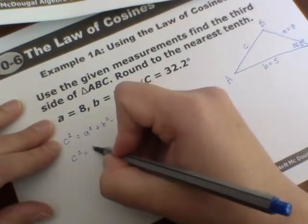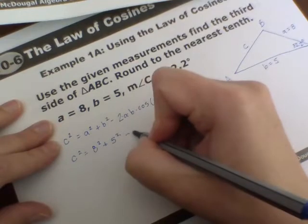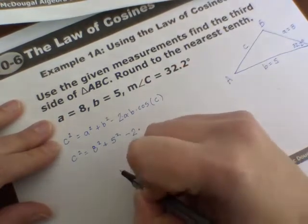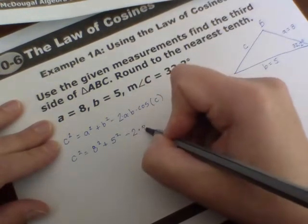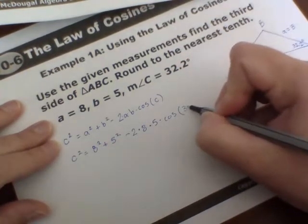So filling this in, our A again is 8, so we'll have 8 squared, that you'll add to 5 squared, but then you'll subtract the combination of 2 times 8 times 5 times the cosine of 32.2 degrees.